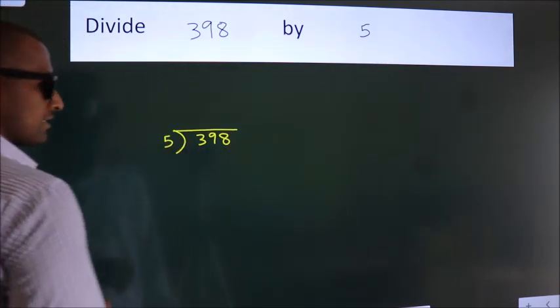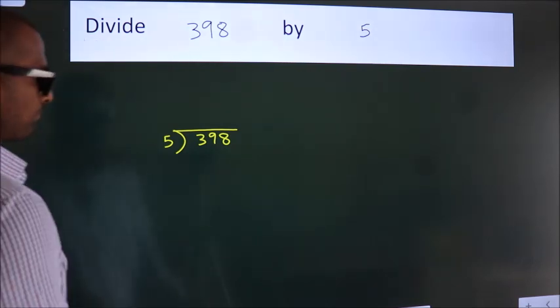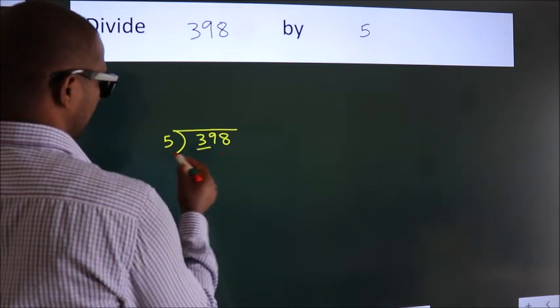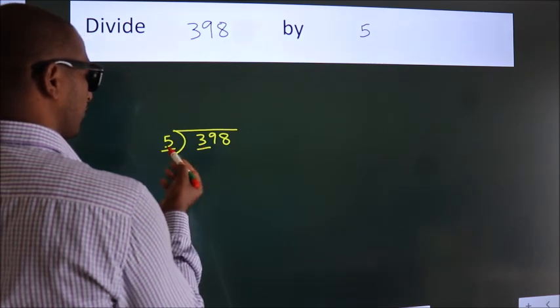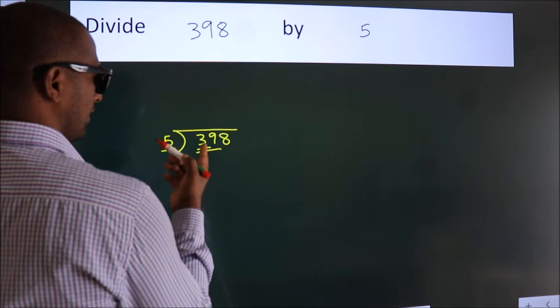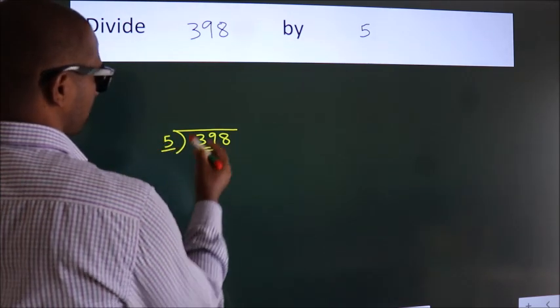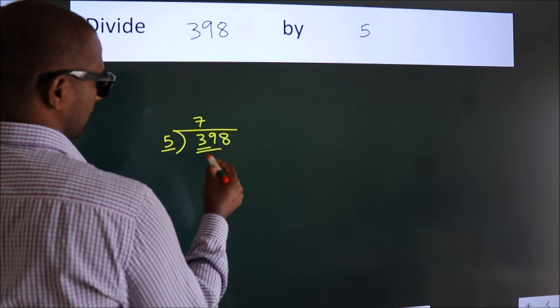This is your step 1. Next, here we have 3. Here 5. 3 is smaller than 5, so we should take 2 numbers: 39. A number close to 39 in the 5 table is 5 times 7 equals 35.